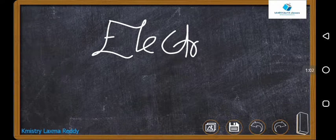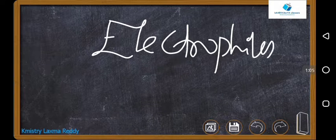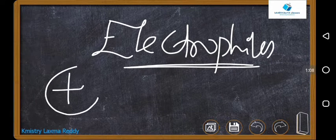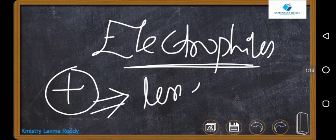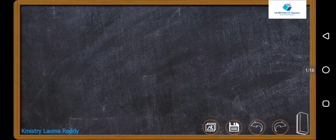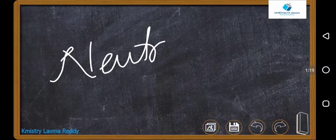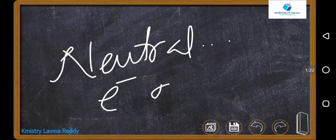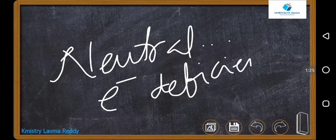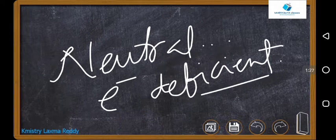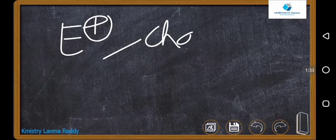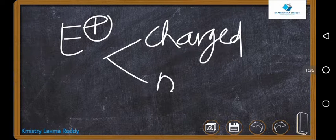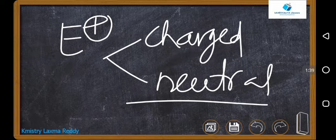We will discuss about electrophiles now. Electrophiles must have a positive charge, meaning they have fewer electrons than required. Otherwise, they may be neutral — if neutral, they must be electron deficient. Two types of electrophiles are possible: charged electrophiles and neutral electrophiles.